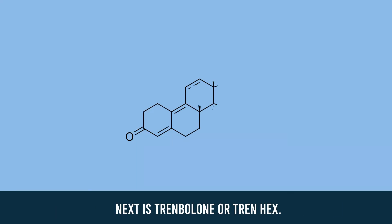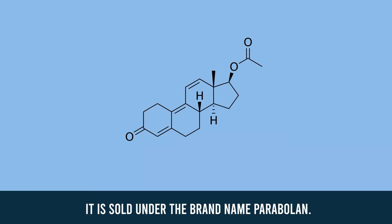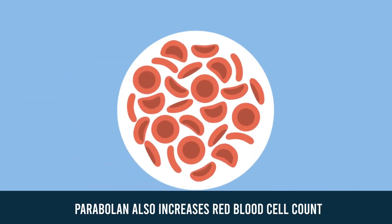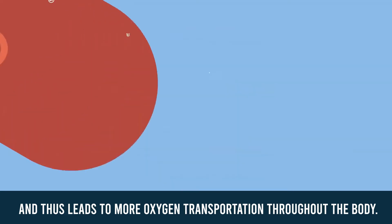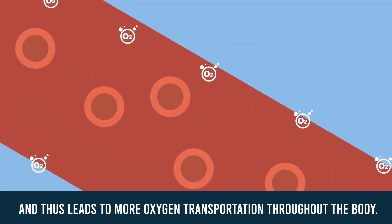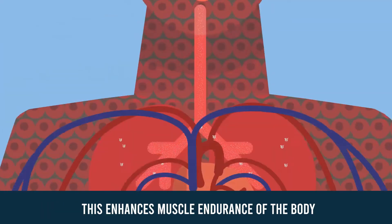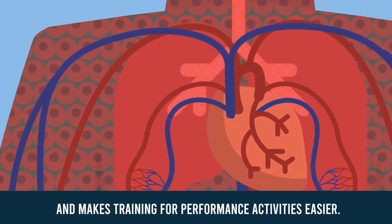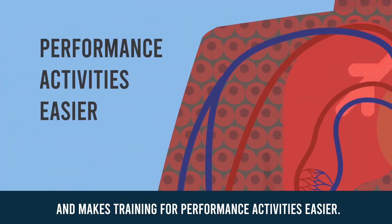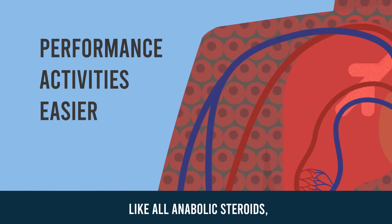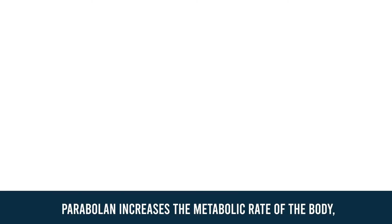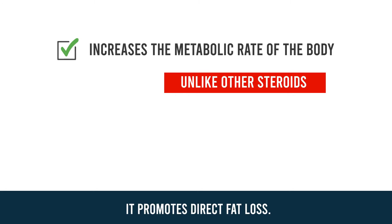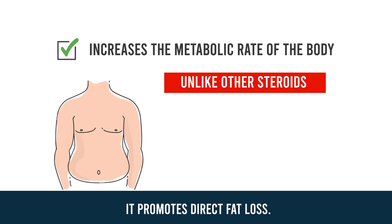Next is trenbolone hex, sold under the brand name Parabolin. Parabolin also increases red blood cell count and thus leads to more oxygen transportation throughout the body. This enhances muscle endurance and makes training for performance activities easier. Like all anabolic steroids, Parabolin increases the metabolic rate of the body, but unlike other steroids it promotes direct fat loss.